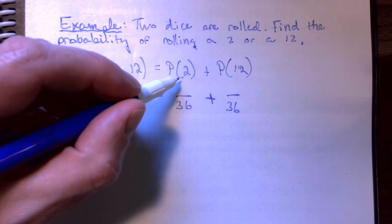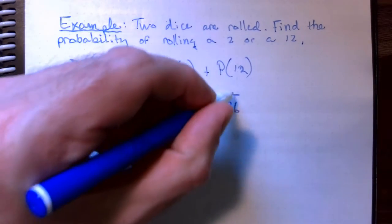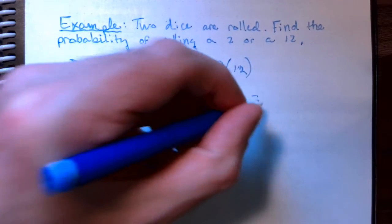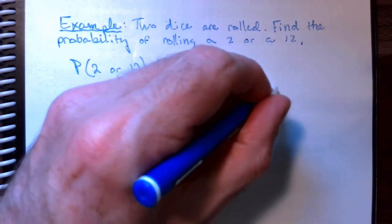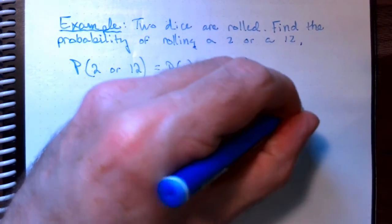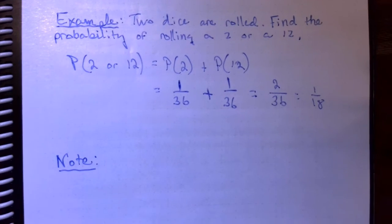There's only one way to get a sum of 2. Both of the die have to come up 1. There's also one way to get a sum of 12. We add the two of them together. We've already got a common denominator. So, 2 out of 36 or 1 out of 18.